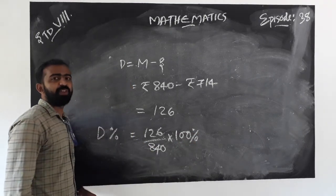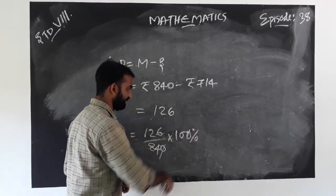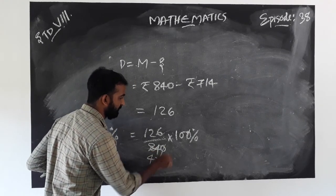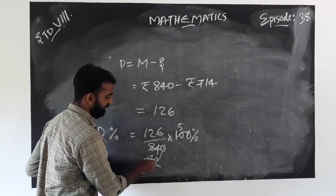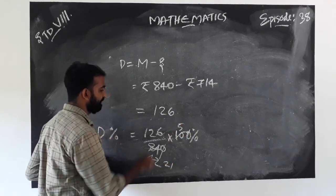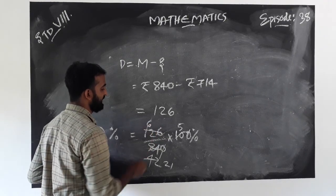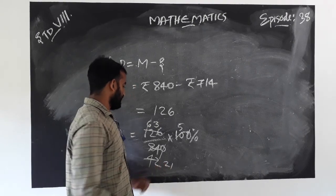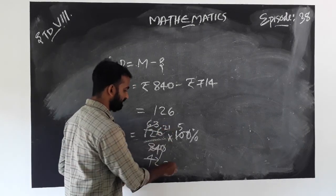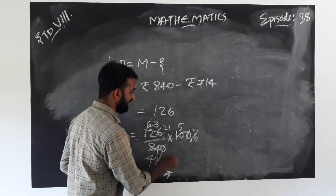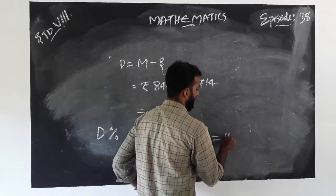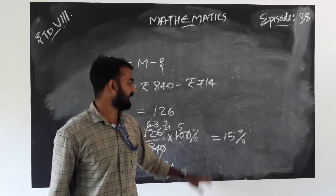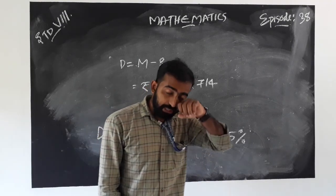When we simplify, we cancel the common factors. We get the discount percentage as 15%. We get 15 percentage discount.